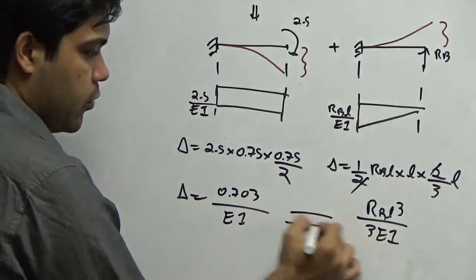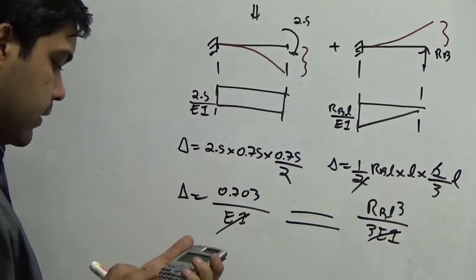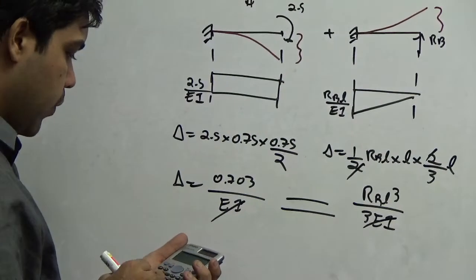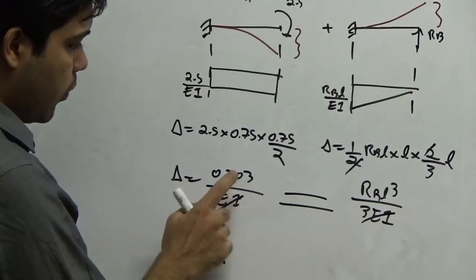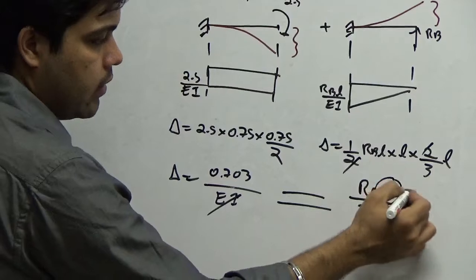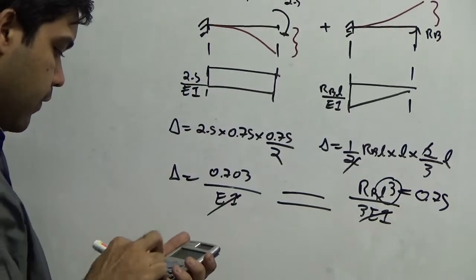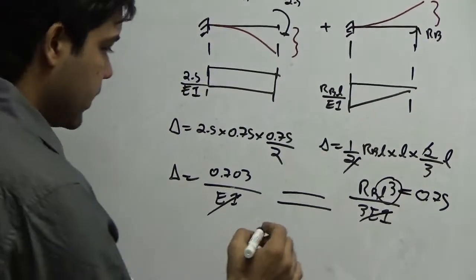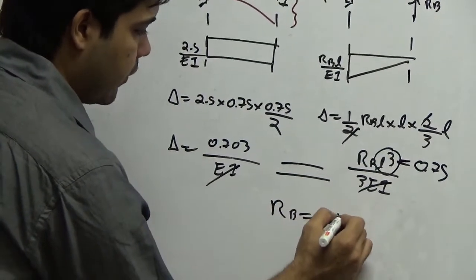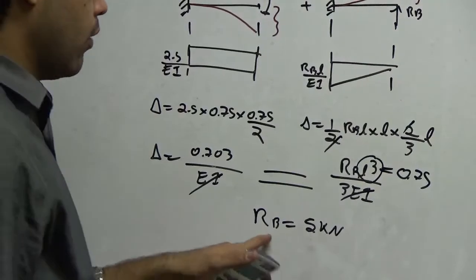Setting the two deflections equal, cancelling EI with EI, we get 3 into 0.703 divided by L-cubed. L is 0.75, so divided by 0.75 cubed. This gives Rb equal to almost 5 kilonewton — 4.99 is the answer, so I am taking Rb as 5 kilonewton.